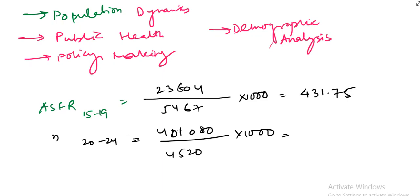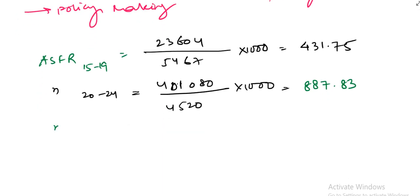And ASFR 25 to 29 is 948,848 divided by 4,371 into 1,000, that is 2,170.71.